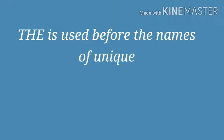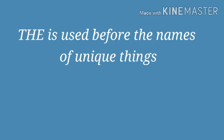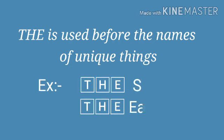The is used before the names of unique things, for example, the sun, the earth, the moon, etc.